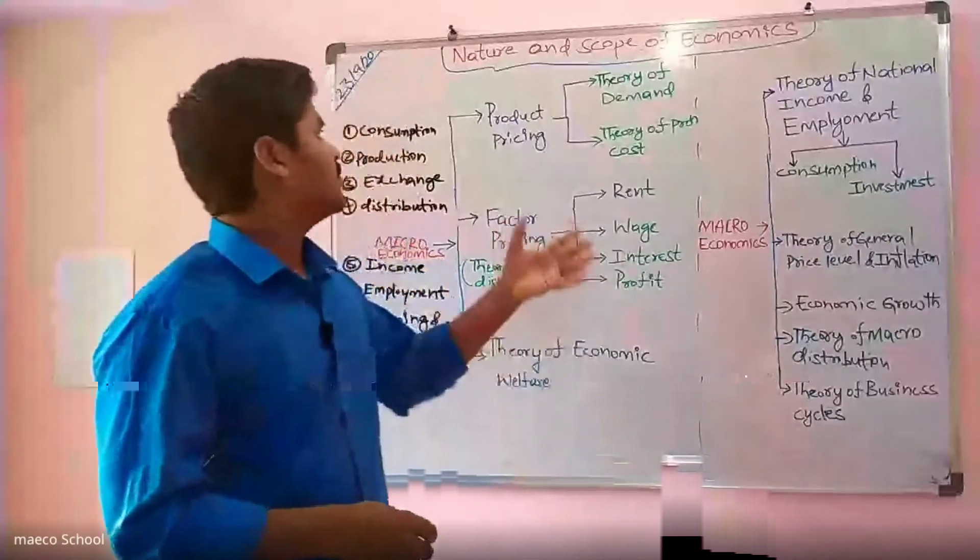In macroeconomics, the theory of national income and employment studies how national income is calculated across all states — for example, accumulating each state's gross state domestic product. There are three methods to calculate national income: the income method, the expenditure method, and the output method. These are all studied in the macroeconomic perspective.